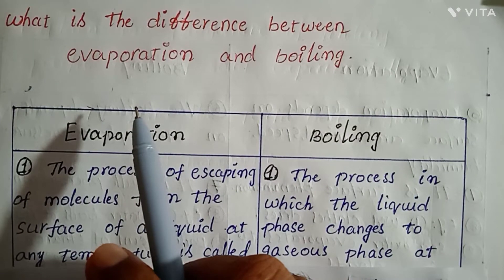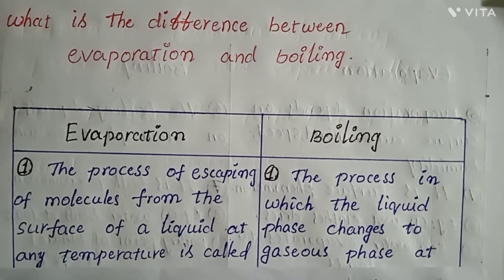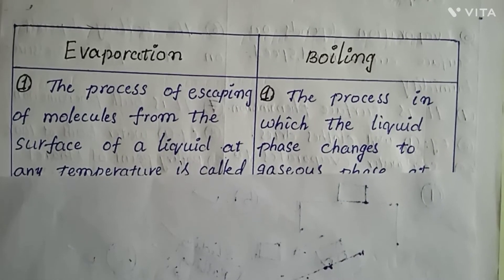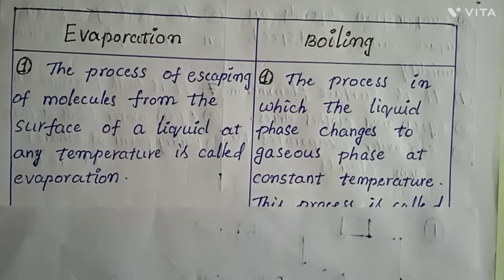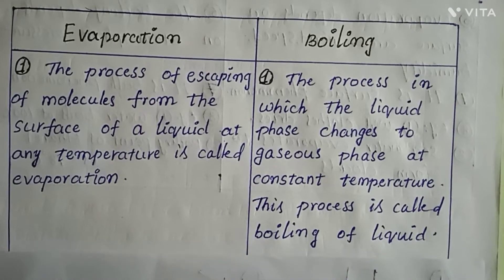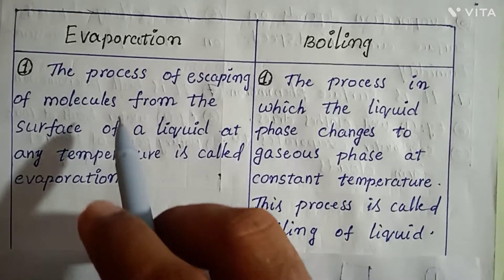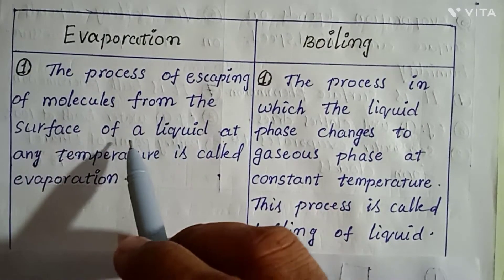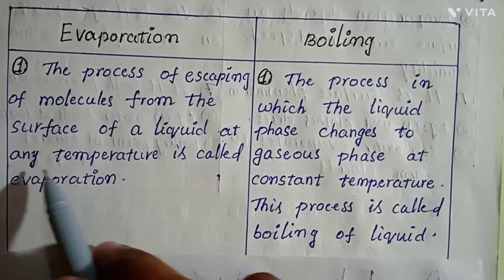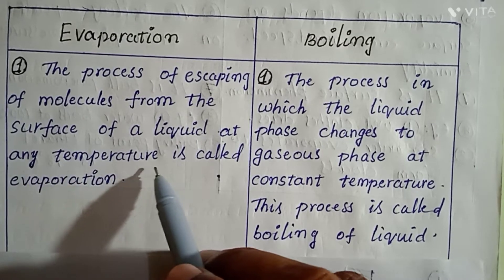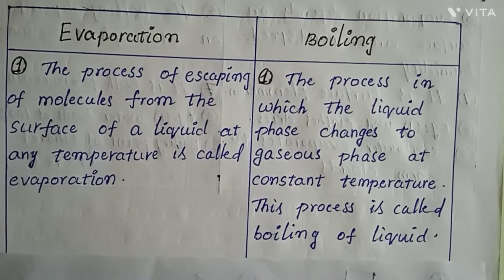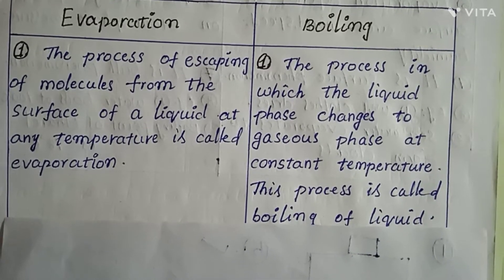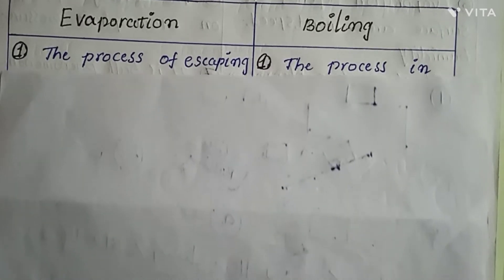What is the difference between evaporation and boiling? See the first difference here. Evaporation — the definition of evaporation is the process of escaping of molecules from the surface of a liquid at any temperature. See the keyword here: at any temperature. Which means evaporation takes place at any temperature.